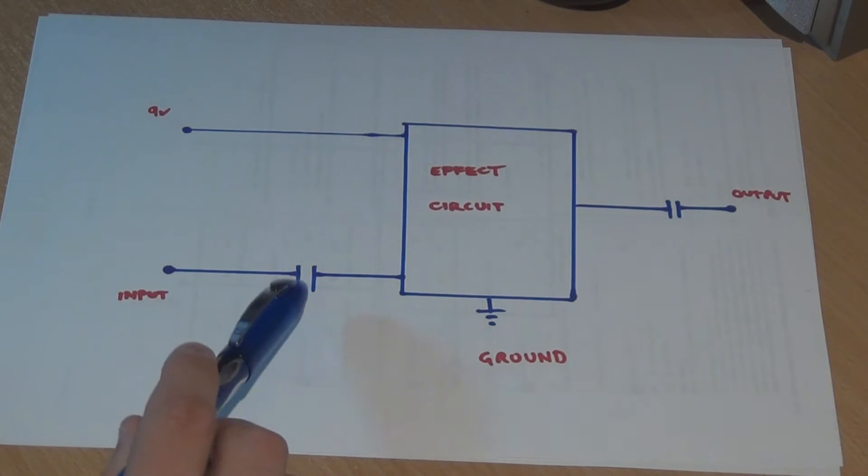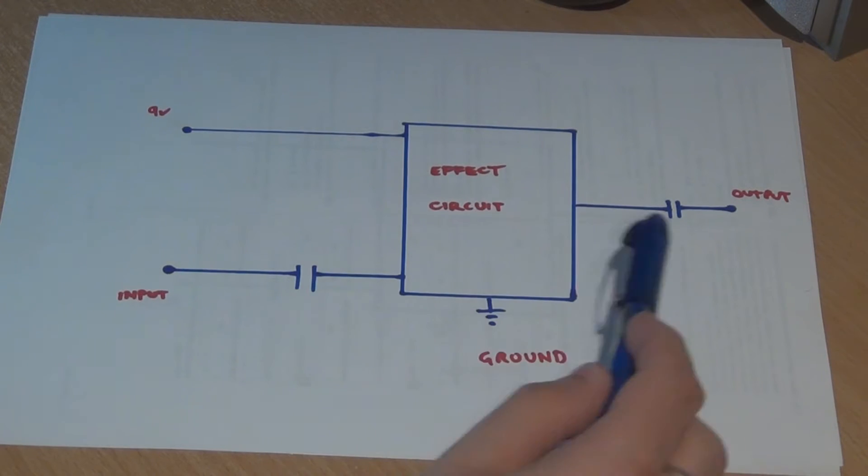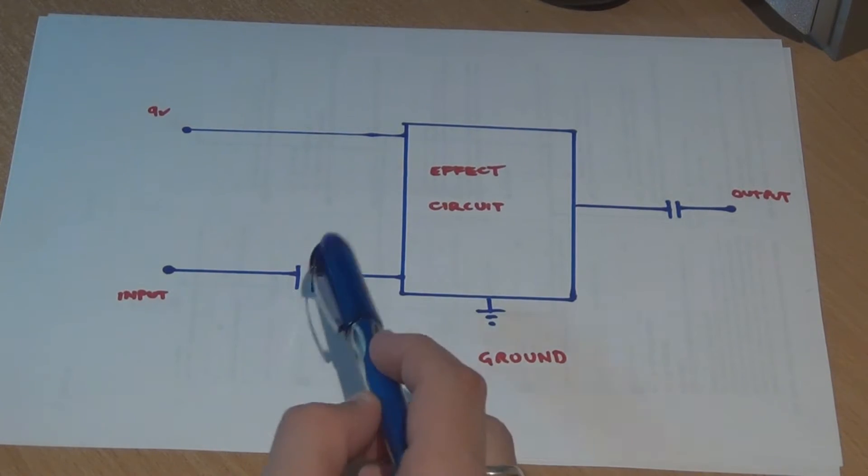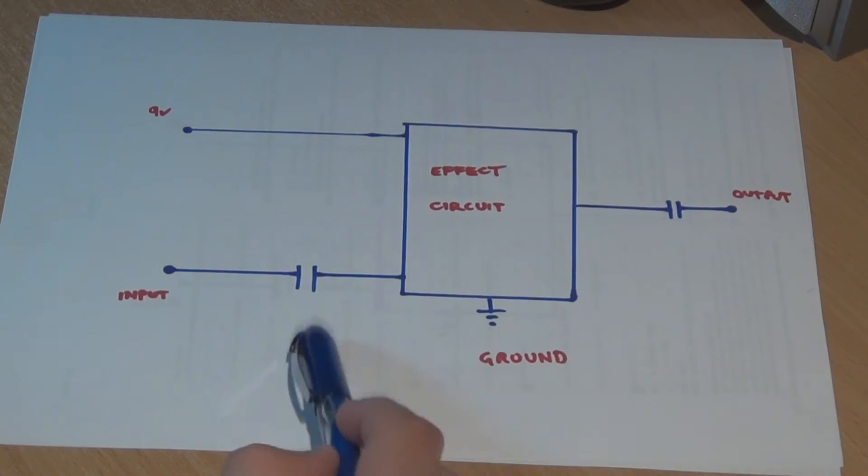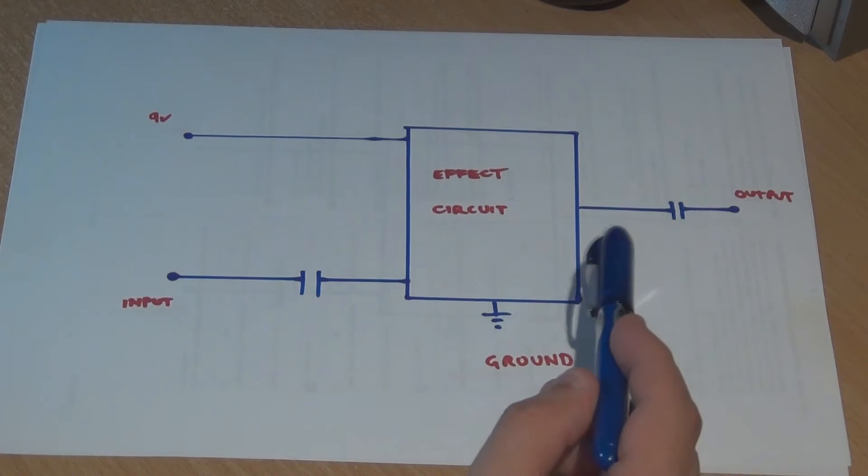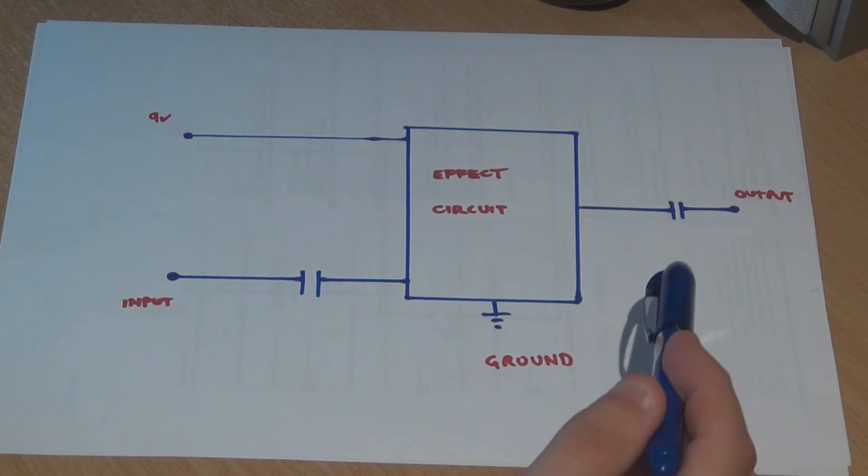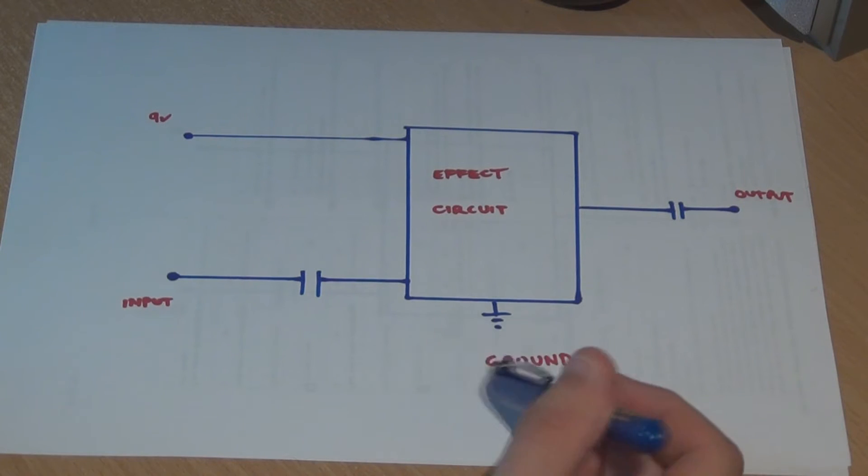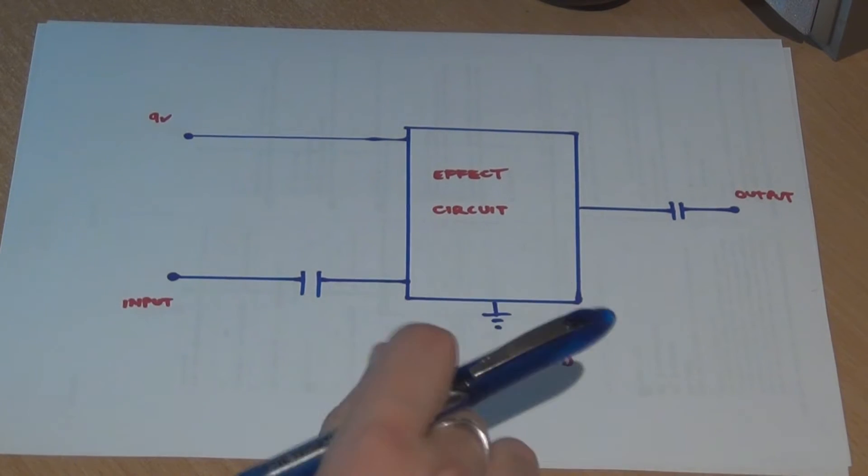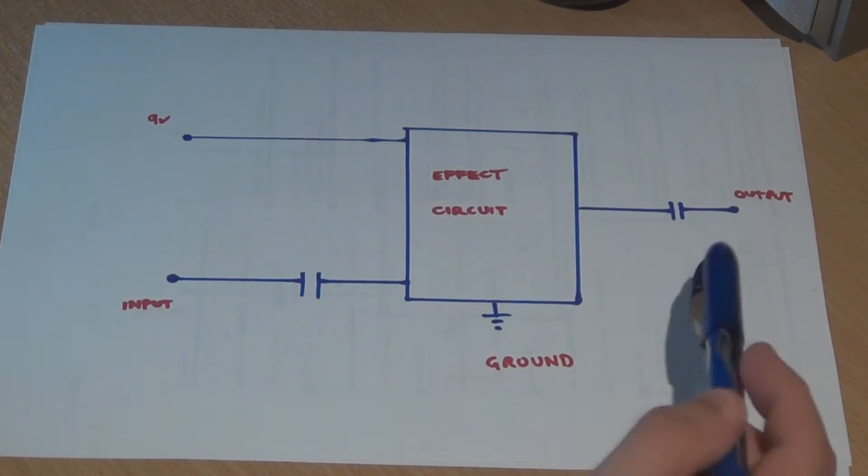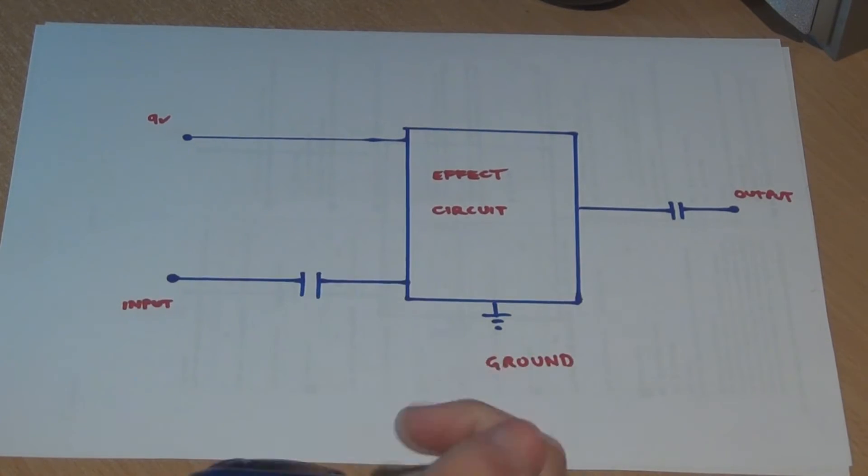And then you've got these two capacitors on the input and the output. You'll find that with most guitar pedals you'll have a capacitor on the input and the output. Sometimes you don't have one on the input, but it's kind of a general standard with guitar pedals and audio circuits in general to have a capacitor on the input and the output. You'll see why when we go through this example.